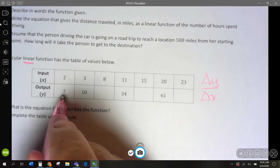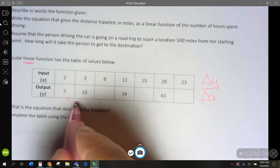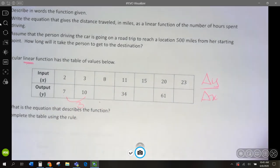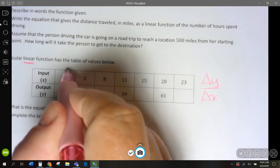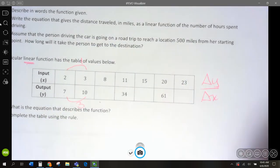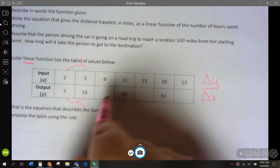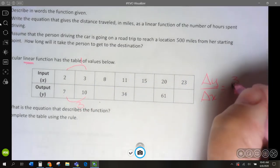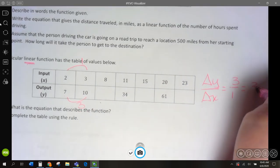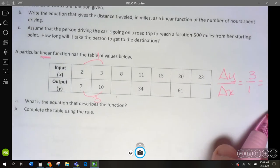So, to get from 7 to 10, our change is 3. And to get from 2 to 3, our change is 1. So, we'd have 3 over 1, or 3. So, our slope is going to be 3.